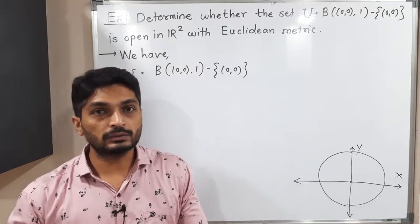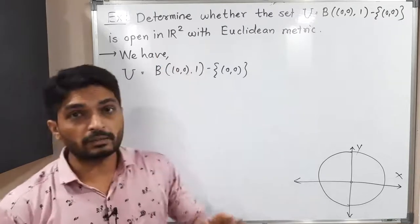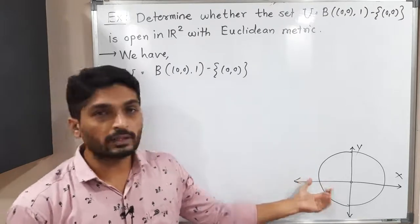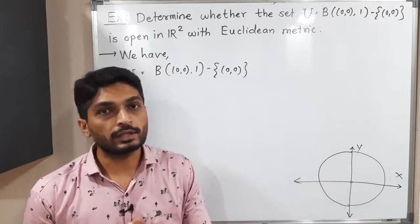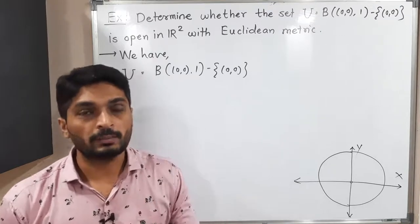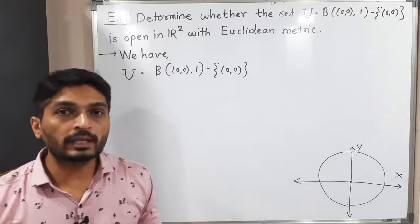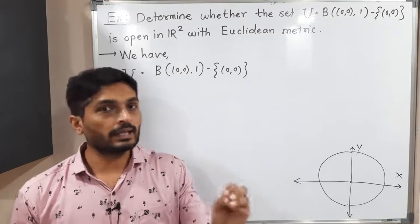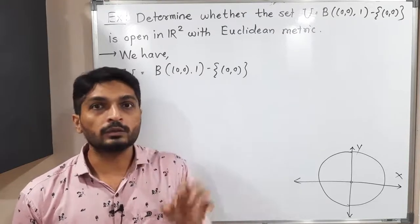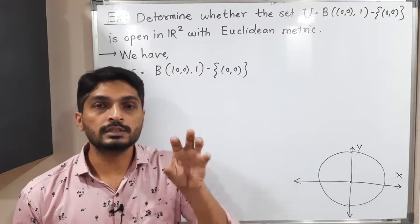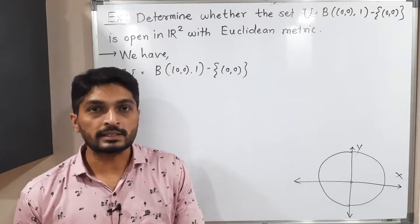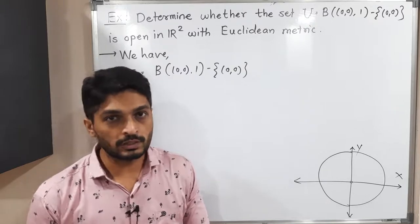They have asked to determine, but actually you can easily see this is an open ball and a single point is removed, so therefore it will be an open set. So this is what we are going to prove. To prove any set is open, we take any arbitrary point, and after that we try to find a ball around it which is a subset of that set. Then we can declare it is an open set. Same technique I will use here.